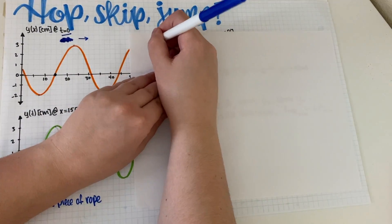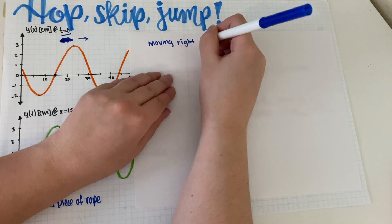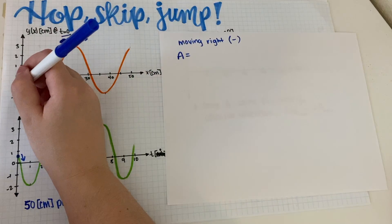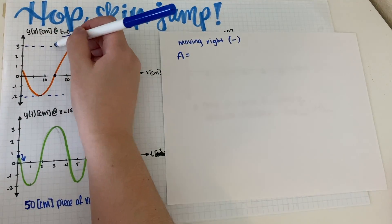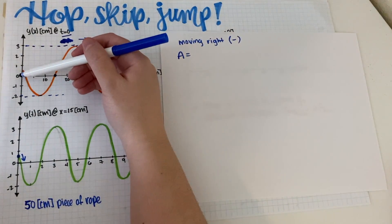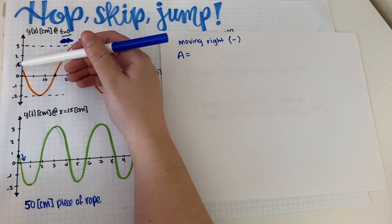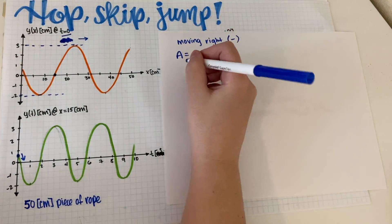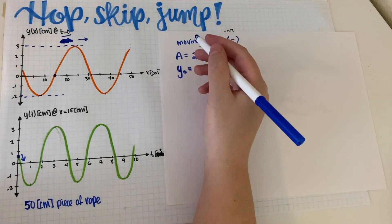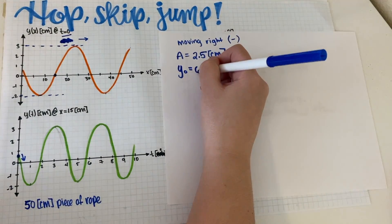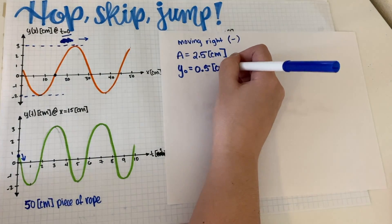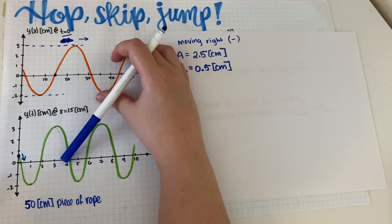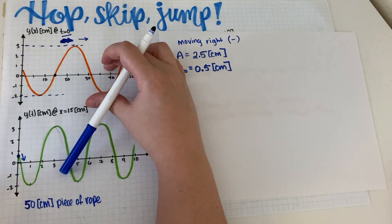So the original wave is moving right, which means that's a negative sign in the wave equation. For amplitude, we take max minus min: that's one, two, three, four, five divided by two, giving 2.5 centimeters. For equilibrium position, max minus amplitude: 3 minus 2.5 equals 0.5 centimeters. This graph was displaced 0.5 centimeters upward.